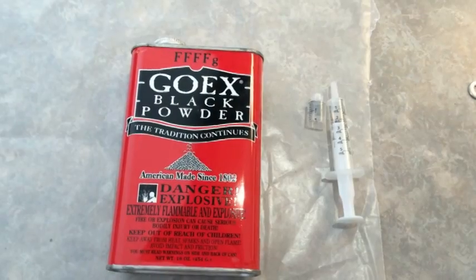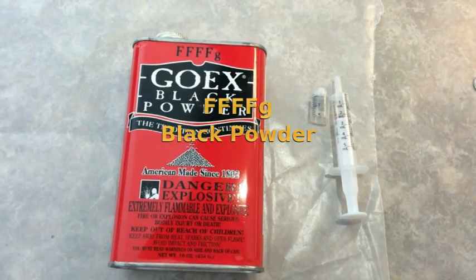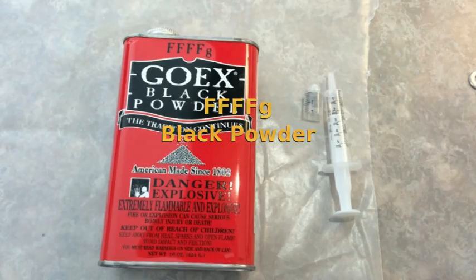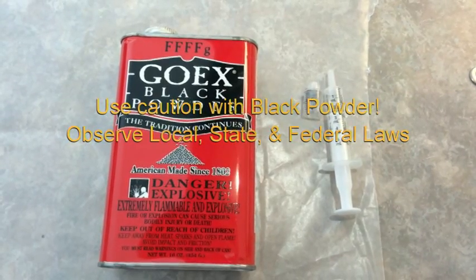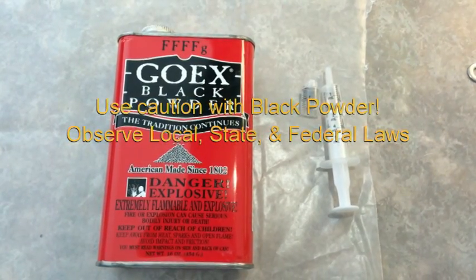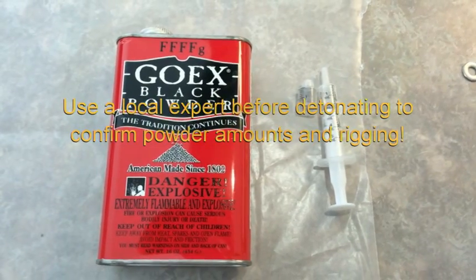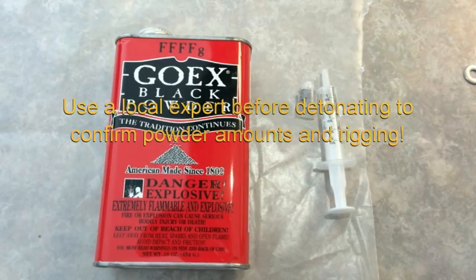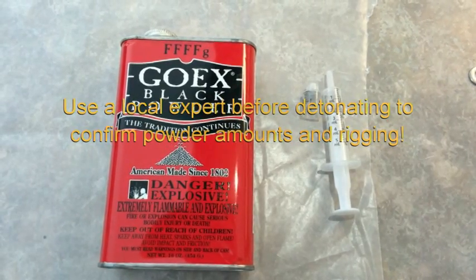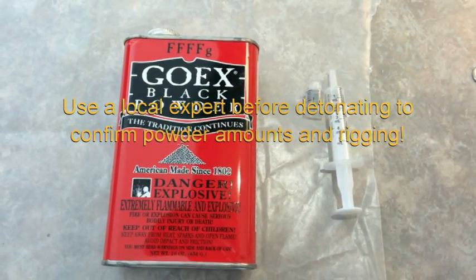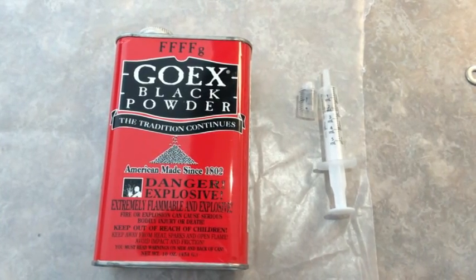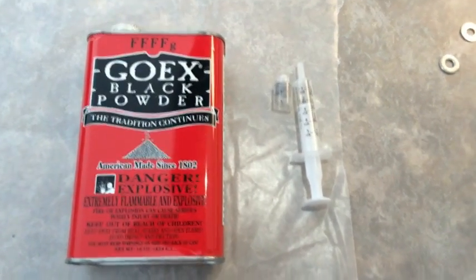Next you want to locate FFFFG black powder. This for me was extremely hard to find. I called all my local pawn shops and gun shops and none of them have it. I ended up having to drive for 30 miles to a gun shop in another town in order to gain some of this. Typically this black powder is used for Civil War reloads.